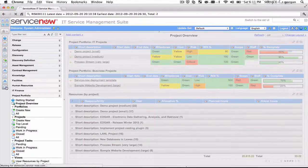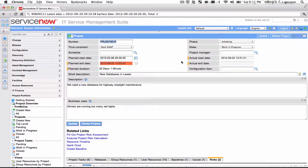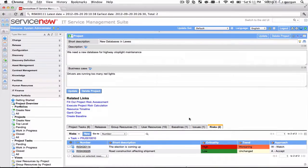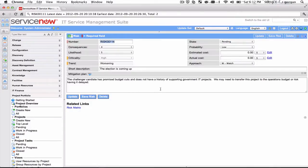So if I go into a project here—and this is just a sample project, has to do with database construction—I have a related list at the bottom that shows me the risks associated with this project. So I can see a short description and I can see the criticality, the trend, and the approach I want to take right from a glance. Just like every list in ServiceNow, I can drill into these to get additional details.